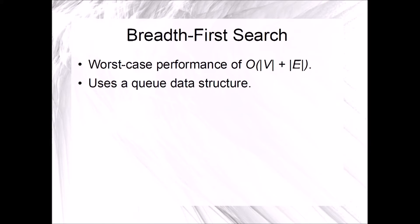The breadth-first search uses a queue data structure to store vertices, as opposed to the stack data structure used by depth-first search. The queue data structure is what supports this behavior of exploring all adjacent vertices before moving on to the next level neighbors.